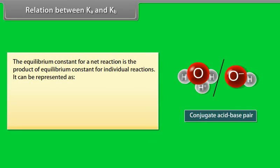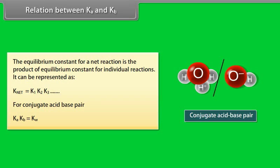Relation between Ka and Kb: The equilibrium constant for a net reaction is the product of equilibrium constants for individual reactions, so Knet = K₁ × K₂ × K₃ ... For a conjugate acid-base pair, Ka × Kb = Kw.